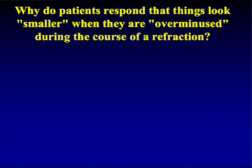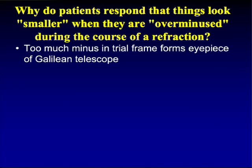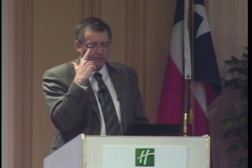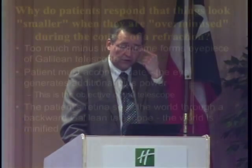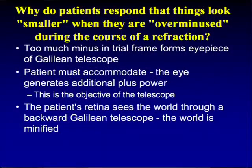Why do patients report that things look smaller when over-minused during refraction? Excess minus in the trial frame acts as the eyepiece of a Galilean telescope, while the patient accommodates — adding plus power inside the eye — acting as the objective. They're viewing the world through a backwards Galilean telescope, so objects appear smaller.